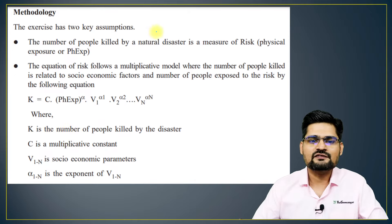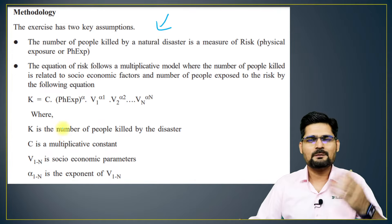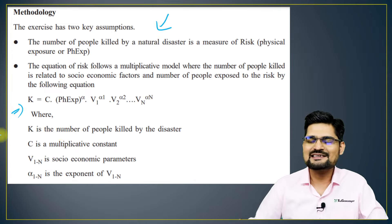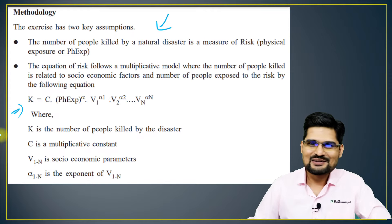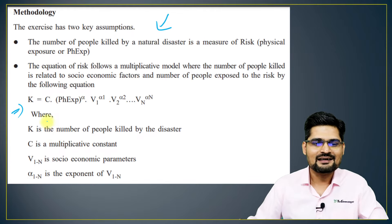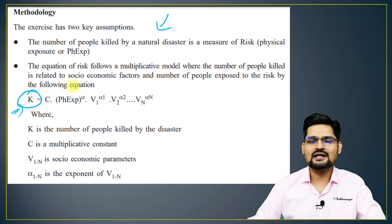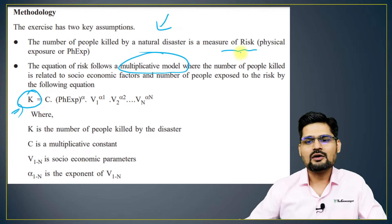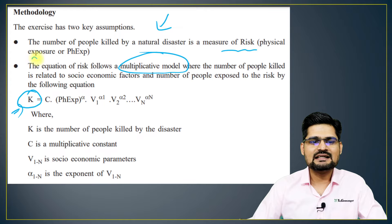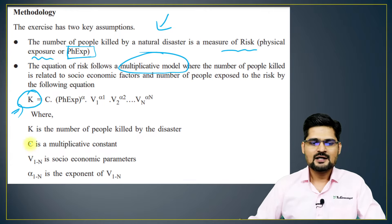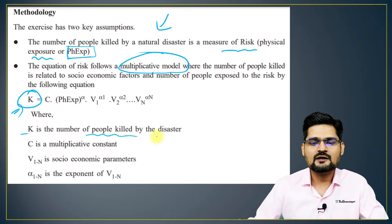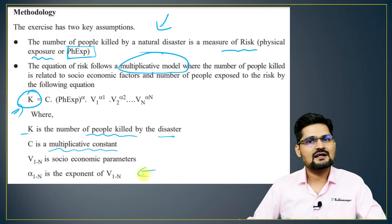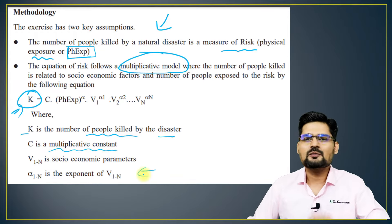Here is a glimpse of the methodology — you can pause the video and note it down if you want to do research. The K value is computed in the multiplicative model, and in the normal model where risk is calculated, it is basically physical exposure (PHXP). The K value is the number of people killed by the disaster, C is the multiplicative constant, and parameters are to be incorporated in the formula.